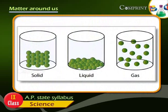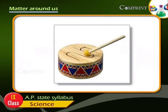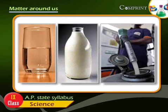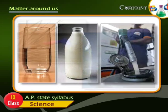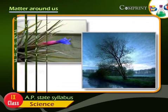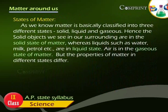The solid objects we see in our surroundings are in the solid state of matter. Liquids such as water, milk, petrol, etc. are in liquid state. Air is in the gaseous state of matter. But the properties of matter in different states differ.